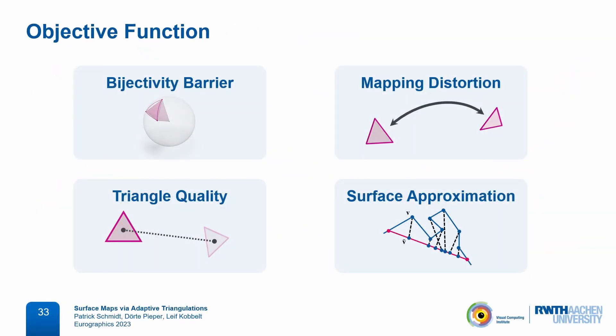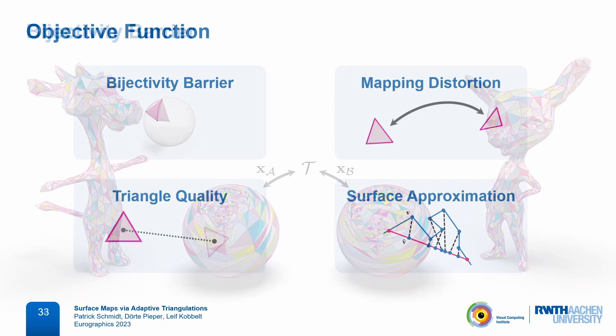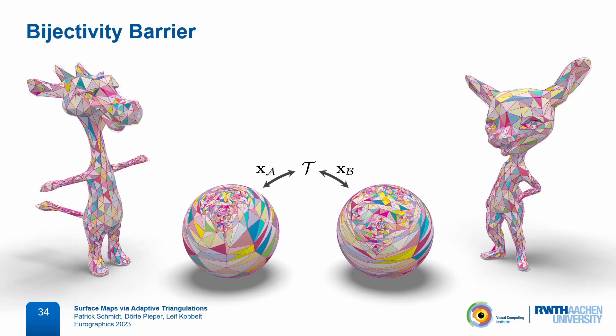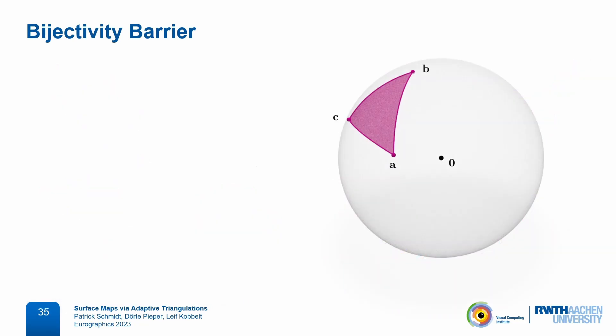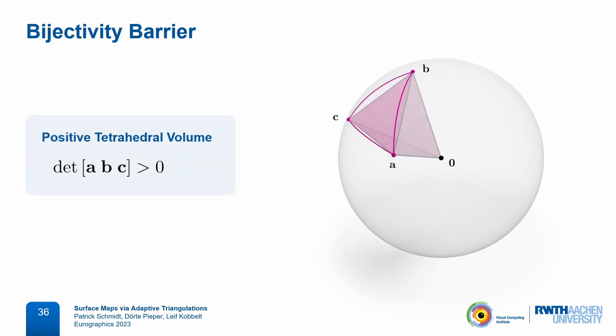The objective function is a sum of multiple terms. First, to keep our representation valid, we need to ensure the triangulation remains embedded bijectively on both spheres, so each spherical triangle needs to have positive orientation. We characterize this by looking at the tetrahedron spanned by the origin and the three vertices and ensuring it has positive volume, and we add a barrier term that maintains this property.